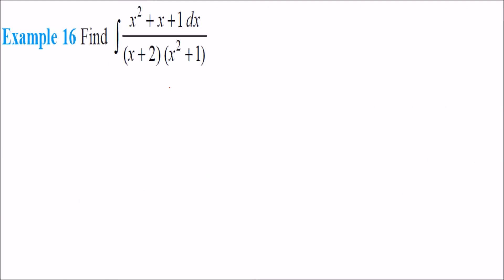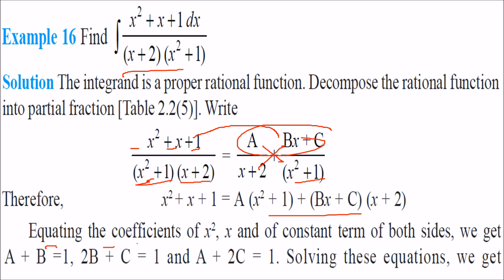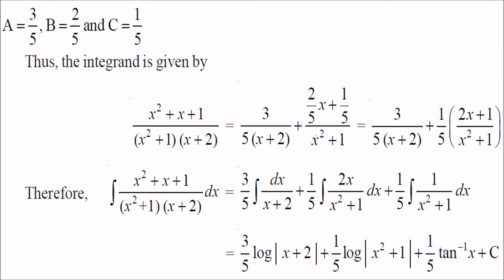For the example (x²+x+1)/[(x+2)(x²+1)]: since (x+2) is linear we use A/(x+2), and since (x²+1) is quadratic we use (Bx+C)/(x²+1). Taking the LCM and equating coefficients of x², x, and the constant term gives three equations, from which A, B, C can be solved. Then we write the integral as the sum of these partial fractions.